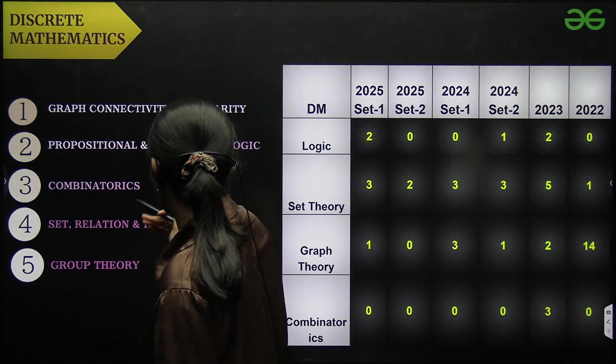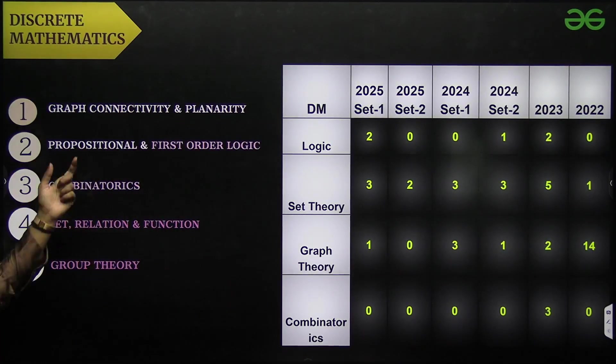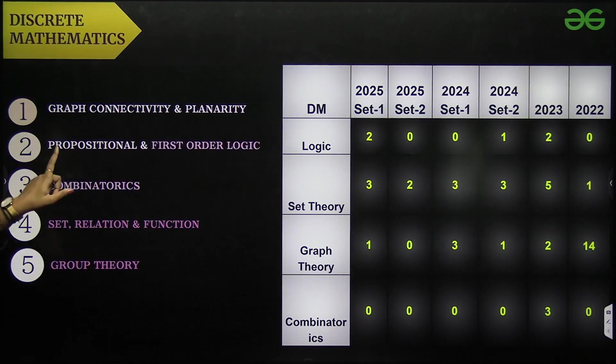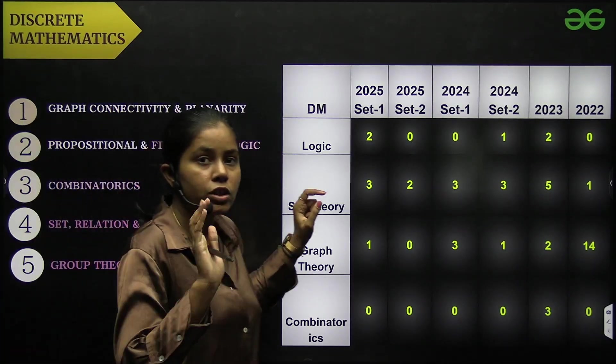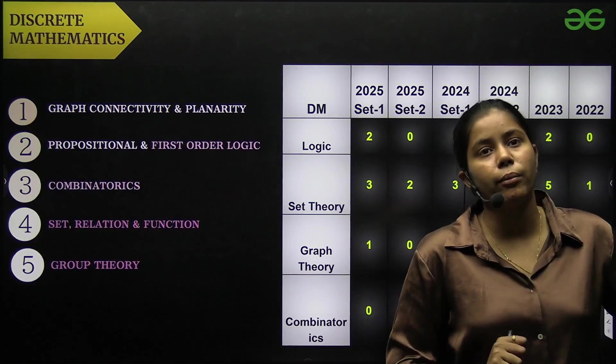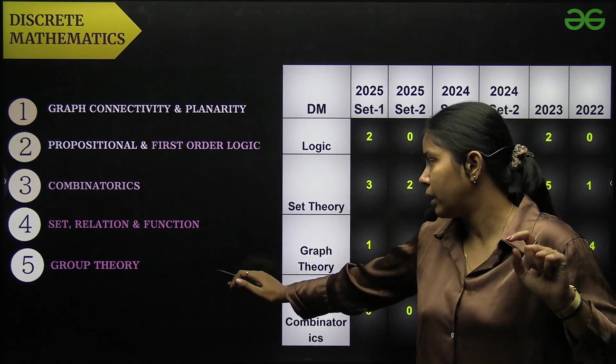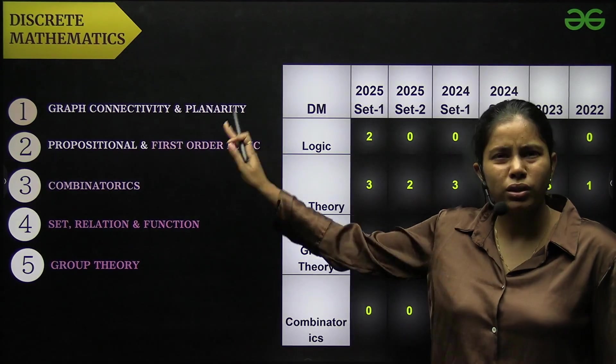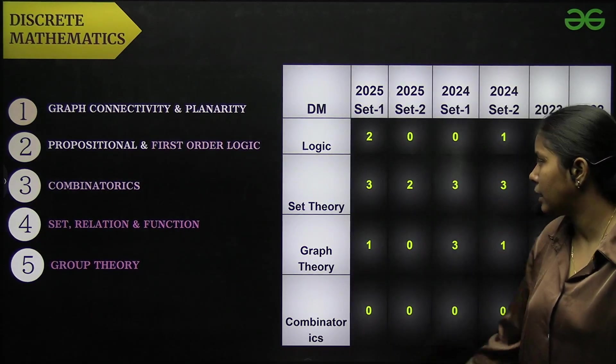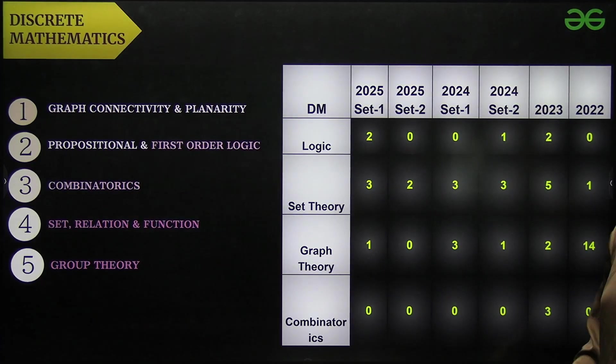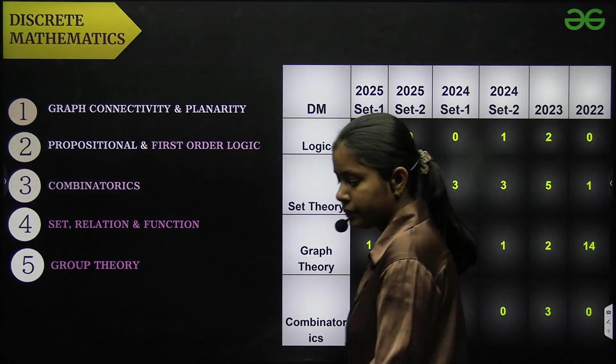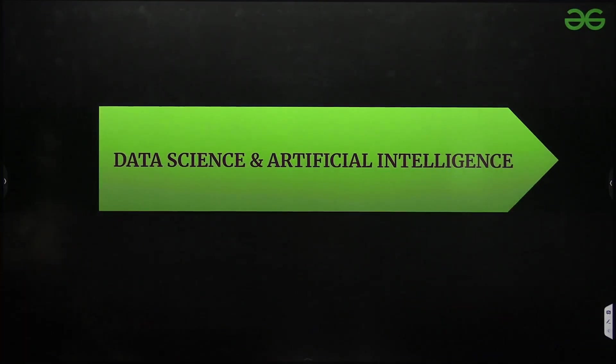We have left with discrete mathematics: graph connectivity and planarity, propositional and first order logic. There is always a question from propositional and first order logic and it is easily doable. Combinatorics, if you study once, it will be helpful for you in probability as well. Set theory, relation, function, group theory. So this is the whole subject. Either they'll ask from set theory or another time from combinatorics. This is the pattern.